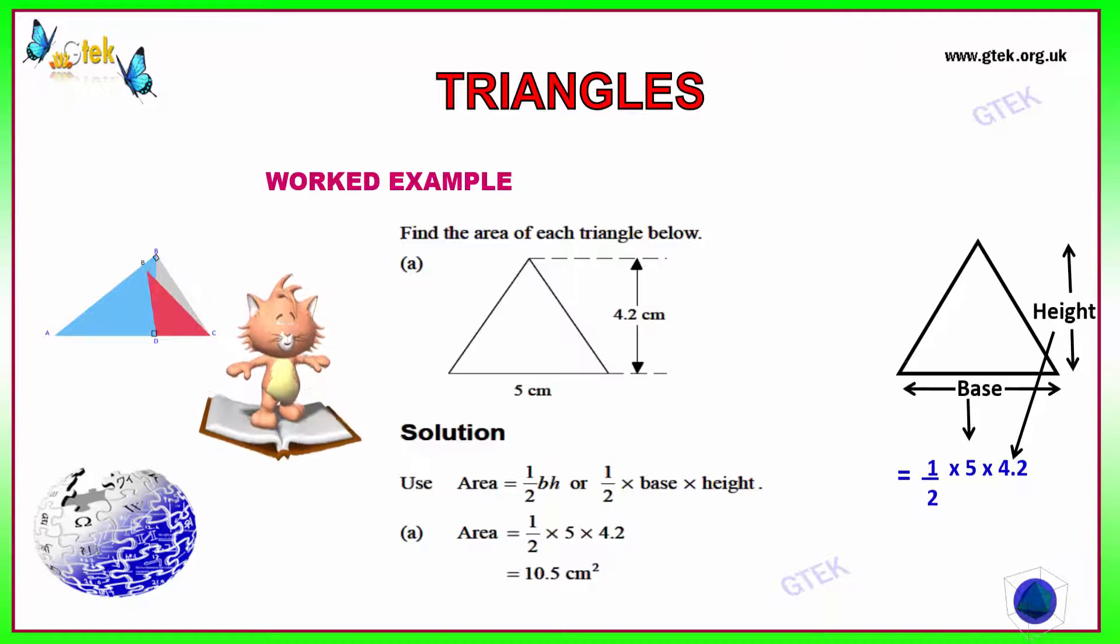Find the area of the triangle below: 5 and 4.2. As I told, half into base into height, that's half into 5 into 4.2, that's 10.5 cm square.